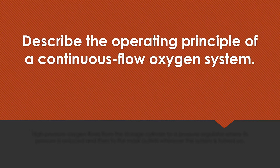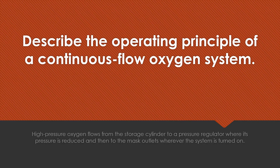Describe the operating principle of a continuous flow oxygen system. High pressure oxygen flows from the storage cylinder to a pressure regulator where its pressure is reduced, and then to the mask outlets whenever the system is turned on.